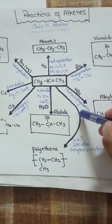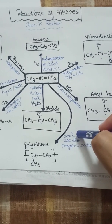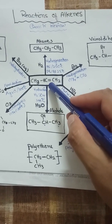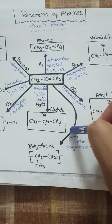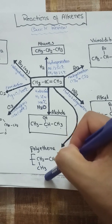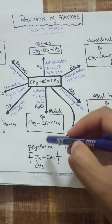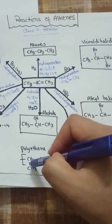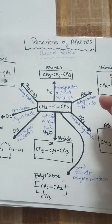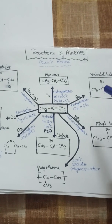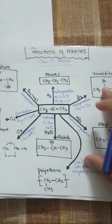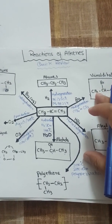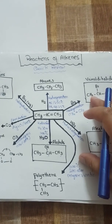The last reaction is polymerization, which occurs at 200°C and 200 atmospheric pressure. Monomers of ethylene or propylene get attached to each other; hundreds of monomers become linked to give a polymer. For example, propylene gives polypropylene, and ethylene gives polythene, which is used in plastic bags. These are the reactions of alkenes. In our next video, we will take a quick review on reactions of alkynes and then the reactions of the benzene ring. Thanks for watching.